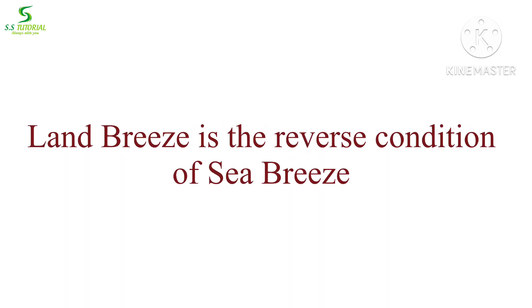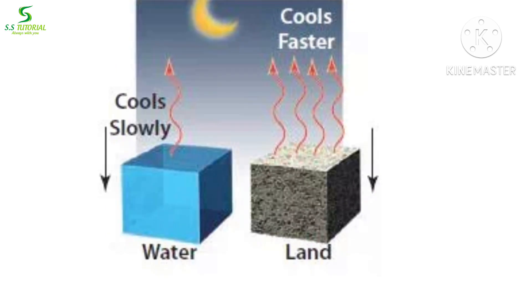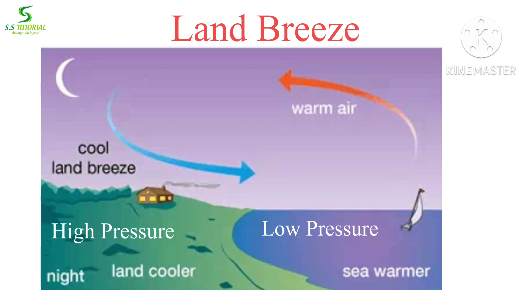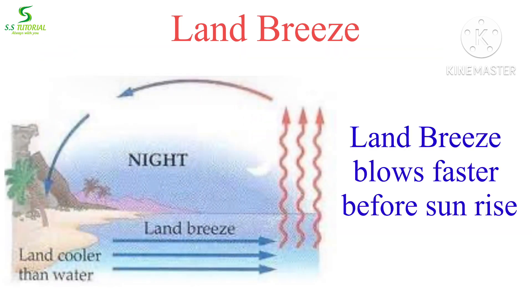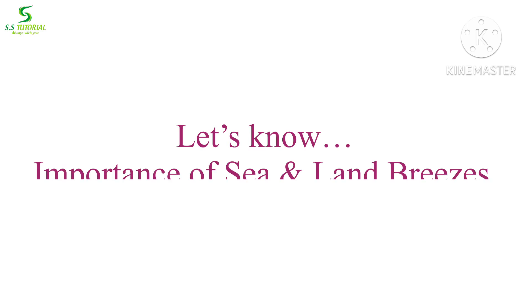The land breeze is the reverse of the sea breeze. During the night, land and the air above it cool faster because they release heat rapidly, but water releases heat very slowly. Therefore, water and the air above it remain warmer. As a result, air above the water rises up, creating a low pressure zone over the water body, while a high pressure zone develops over the land. So winds start to blow from land to sea — this is known as the land breeze. The land breeze blows faster just before sunrise.